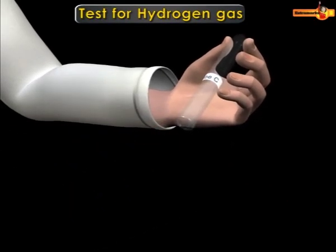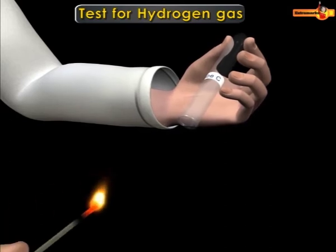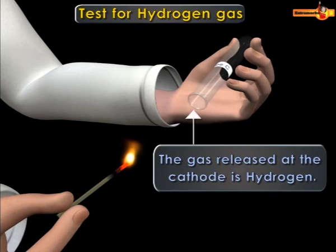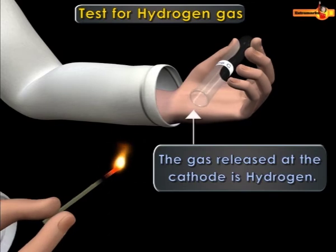Take the test tube C and bring a lit match stick close to its mouth. The pop sound proves that the gas in the test tube C is hydrogen.